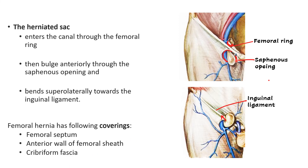The coverings of the femoral hernia sac are three layers that the intestinal loops push through: first, the femoral septum (extraperitoneal loose areolar tissue); second, the anterior wall of the femoral sheath, since the femoral canal lies within the femoral sheath; and third, the cribriform fascia covering the saphenous opening.